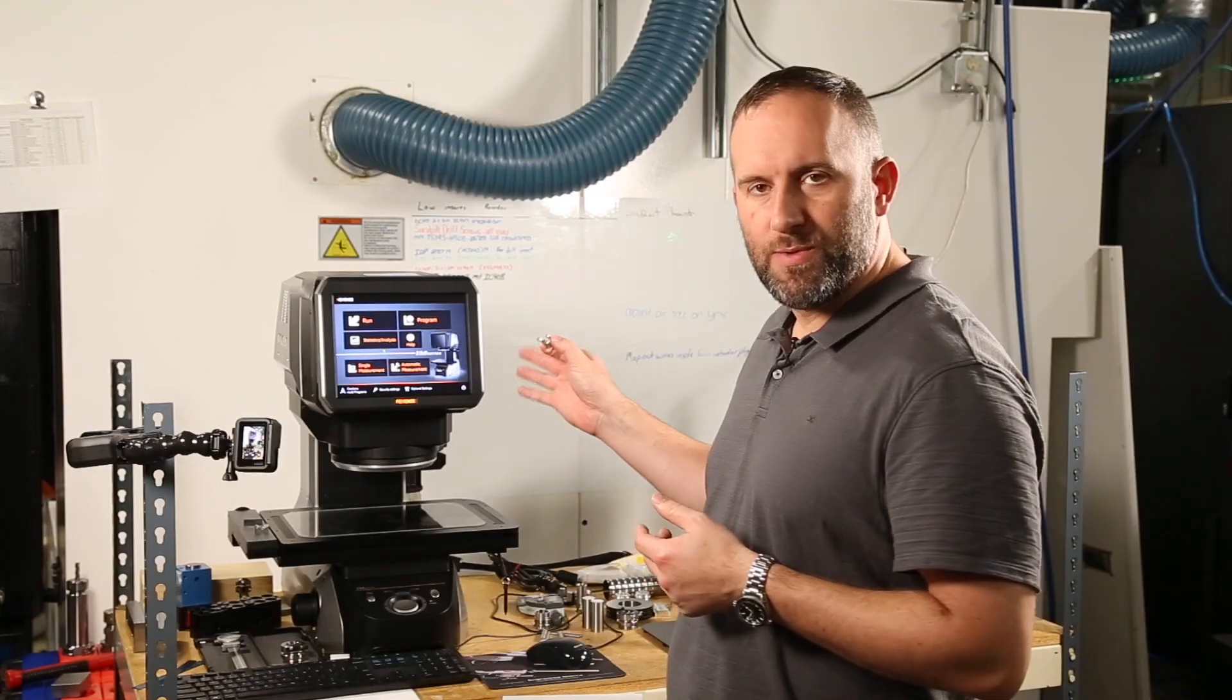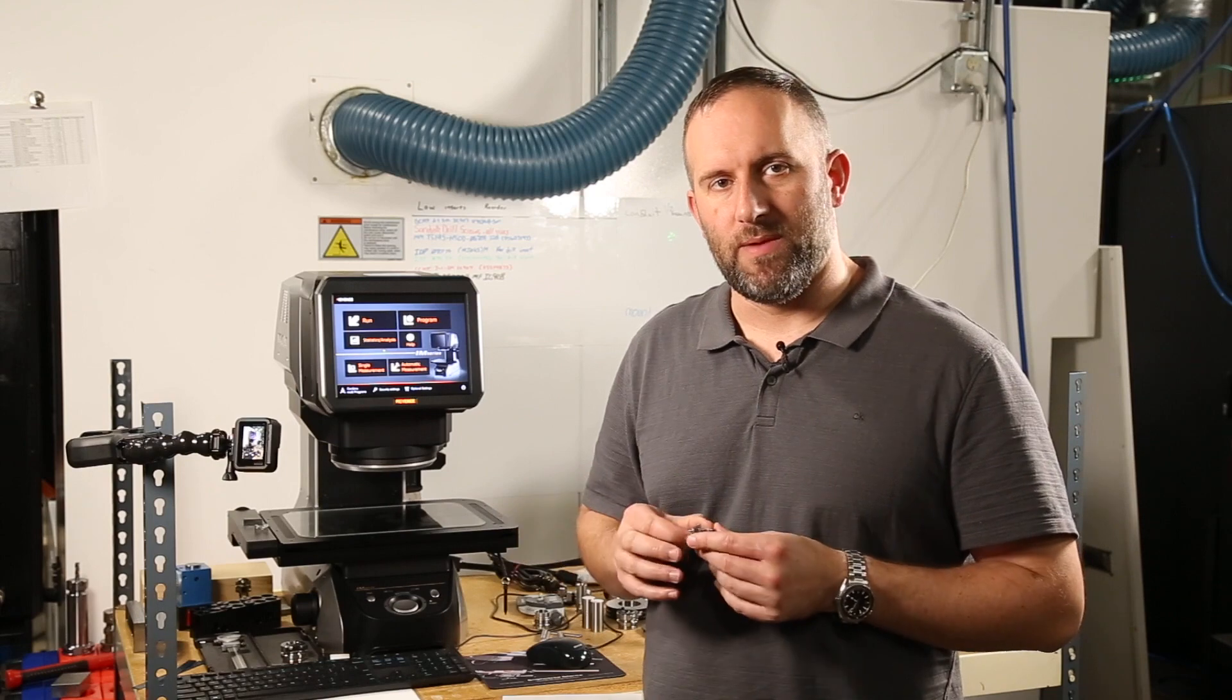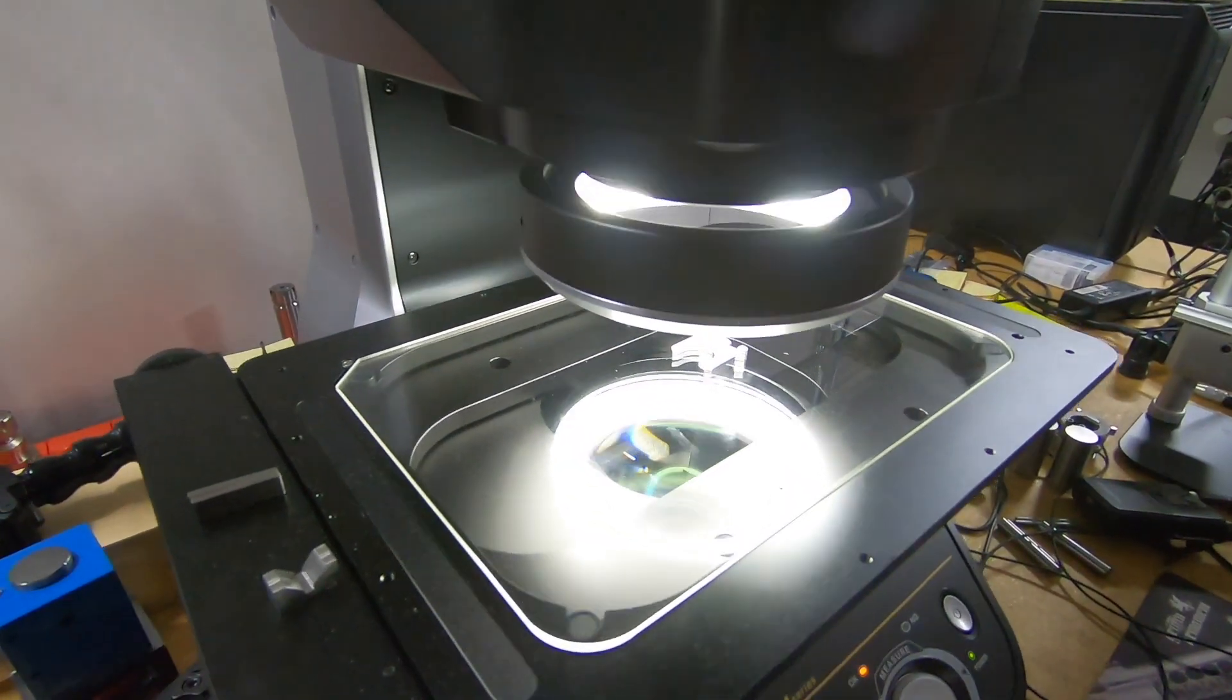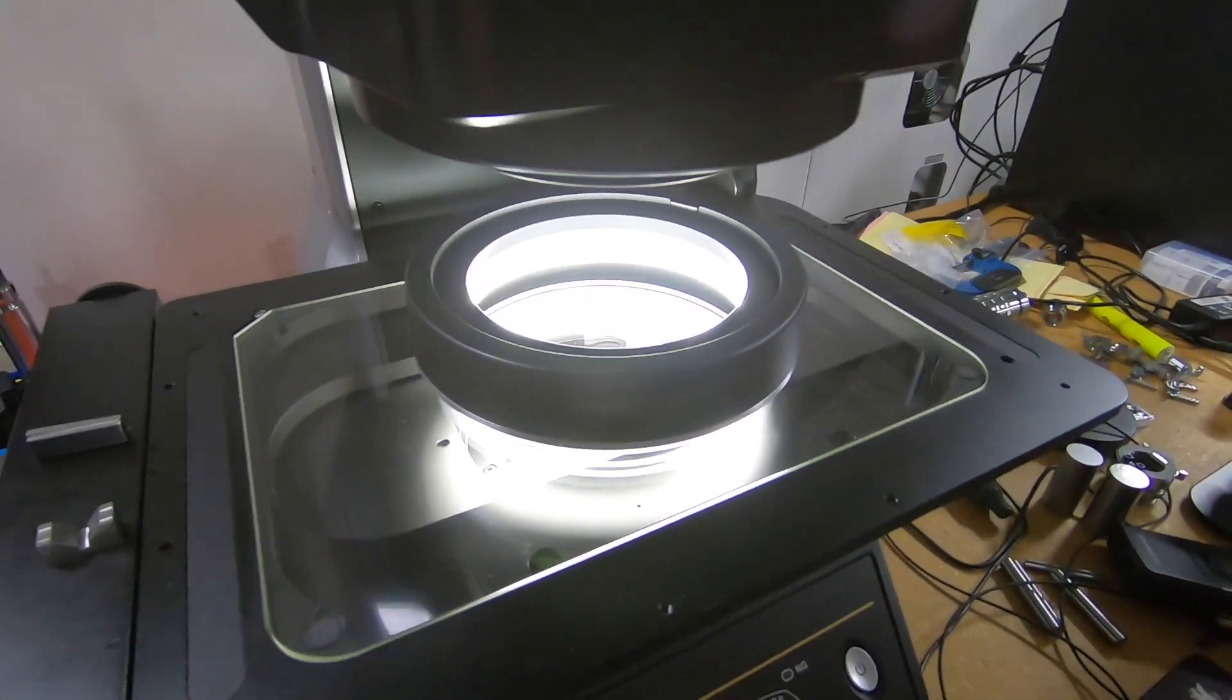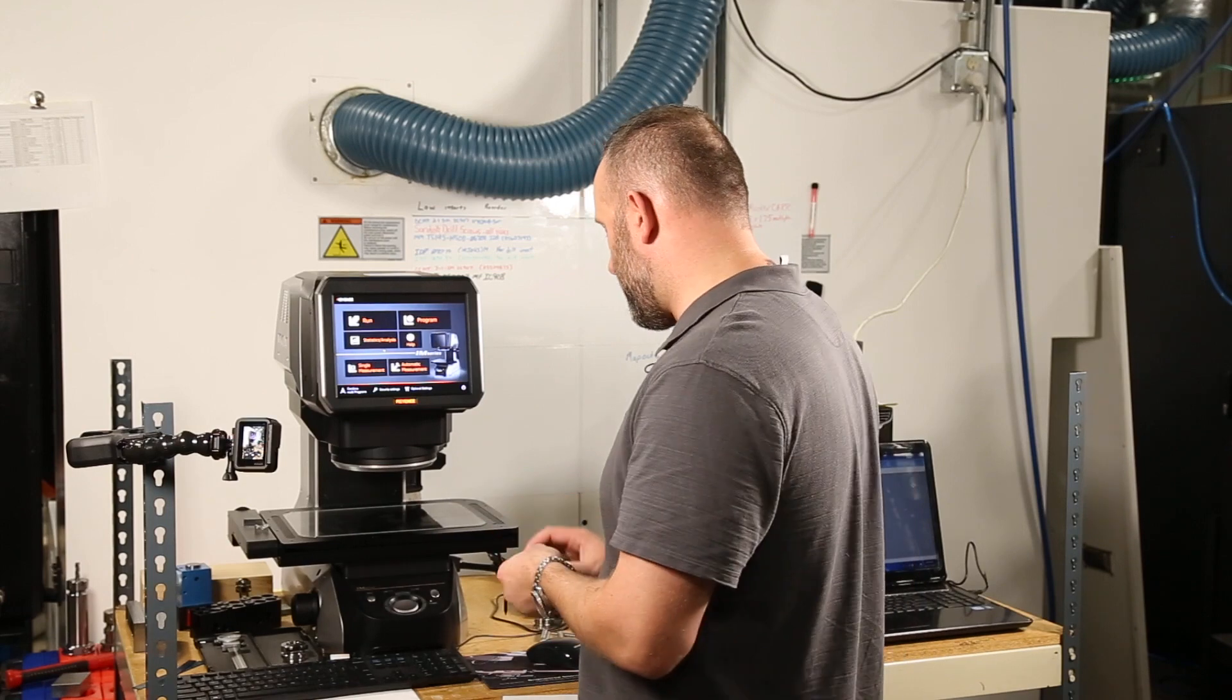The Keyence machine in particular is an optical inspection system that has a light probe, a couple different lights, a couple different cameras, and can measure to two ten-thousandths of an inch accuracy. This equipment makes this stuff much easier to inspect.